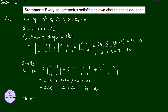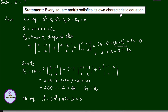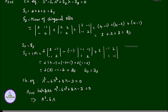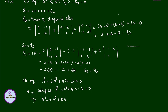Therefore the characteristic equation of the given matrix is lambda cubed minus 6 lambda squared plus 8 lambda minus 3 equals 0. According to the Cayley-Hamilton theorem, every square matrix satisfies its characteristic equation, so A cubed minus 6A squared plus 8A minus 3I equals 0, where I is the 3 by 3 identity matrix.